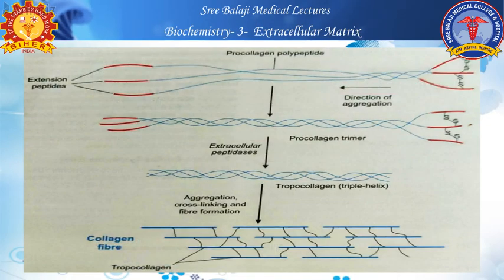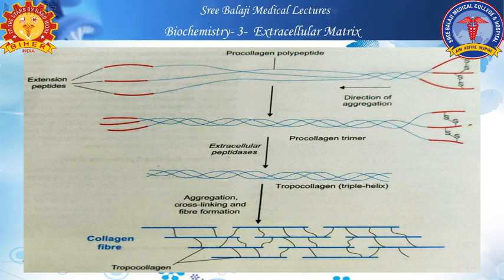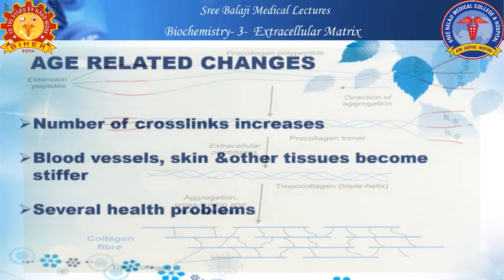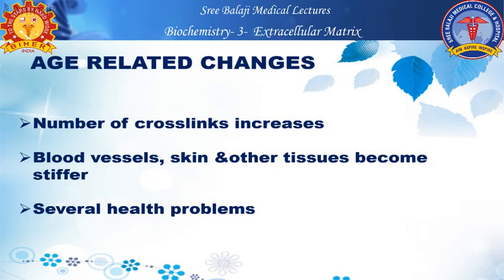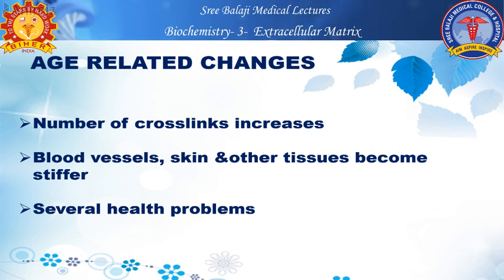This overall picture shows how the procollagen trimer is aggregated and cleaved by extracellular peptidases to form tropocollagen, followed by cross-linking and fiber formation. With advancing age, the number of cross-links increases, causing blood vessels, skin, and other tissues to become stiffer, leading to several health problems.